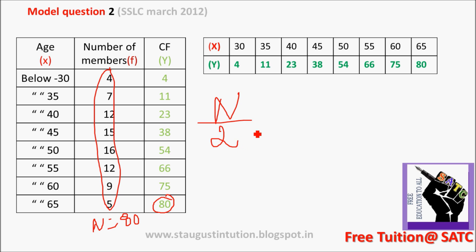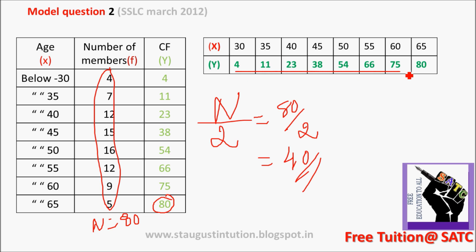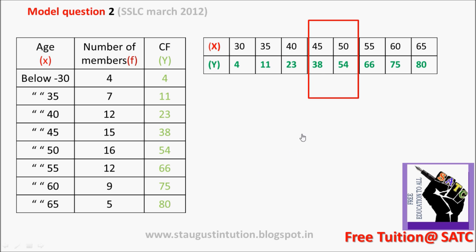n divided by 2 is equal to m divided by 2, which is equal to 40. This 40 is our reference value. This is the median class.